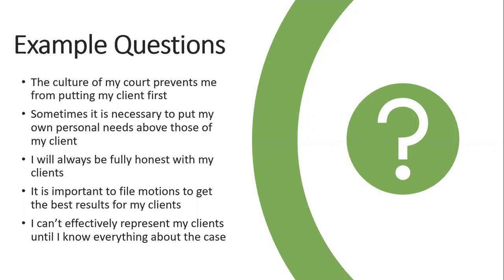From these domains, we developed a number of questions — or statements — such as: 'The culture of my court prevents me from putting my client first,' or 'Sometimes it is necessary to put my own personal needs above those of my clients.' Each of these statements was scored according to a Likert scale from strongly disapprove, disapprove, neutral, agree, and strongly agree — a five-part scale. There were about 40 questions in total that we asked the public defenders and their clients.